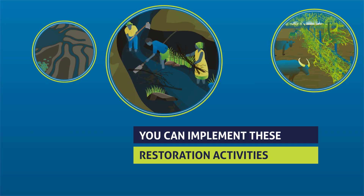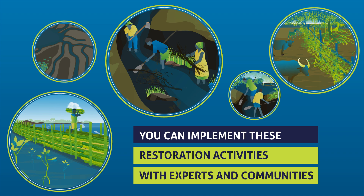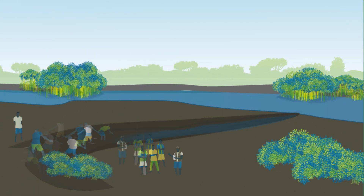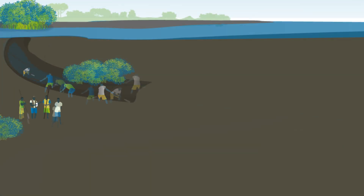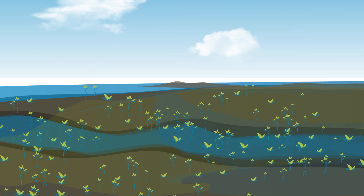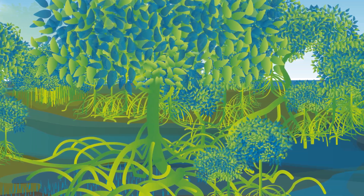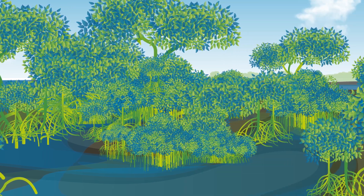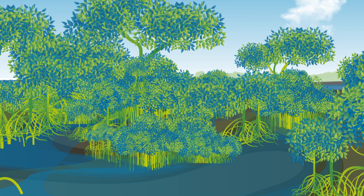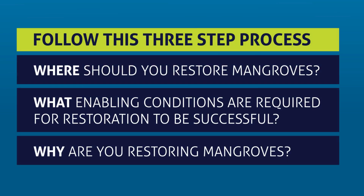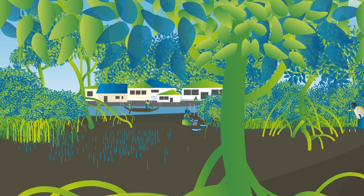You can implement these restoration activities with experts and with communities. For example, in Guinea-Bissau, community members broke up hardened topsoils, breached dikes, and dug creeks to improve the distribution of water and flush salt out of the system. As a result, in most places mangrove seedlings have naturally re-established, and even faster than expected.